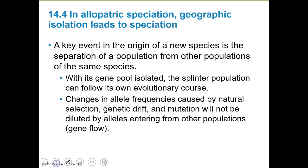Moving on to mechanisms of speciation. A key event in the origin of a new species is the separation of populations from other populations of the same species. As the gene pool is isolated, the splinter population can follow its own evolutionary course. Changes in allele frequencies caused by natural selection, genetic drift, and mutation will not be diluted by alleles entering from other populations through gene flow.